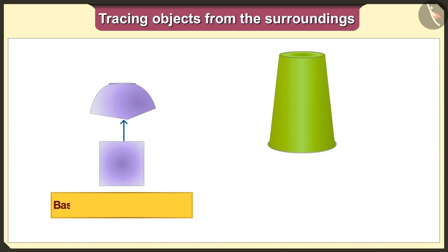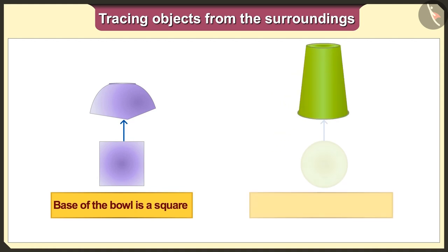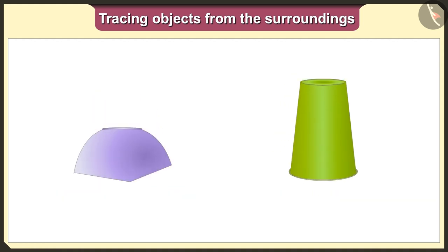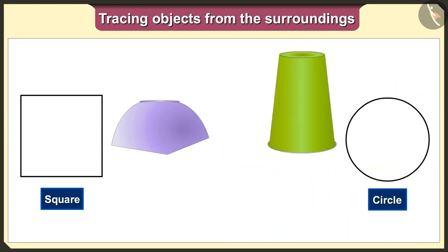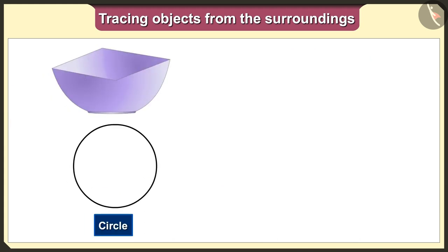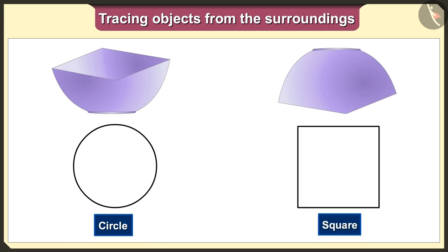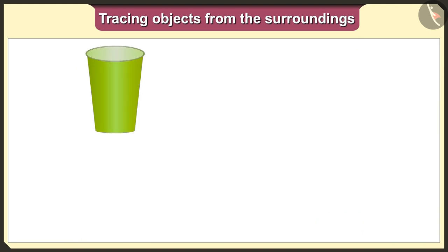Now if we keep the bowl and glass upside down, the base of the bowl is a square and the base of the glass is a circle. If we keep the bowl facing downward and trace it, we will get the square shape. If we keep the glass facing downward and trace it, we will get the circle shape. So if we keep the bowl straight and trace it we get a circle, and if we keep it upside down we get a square.